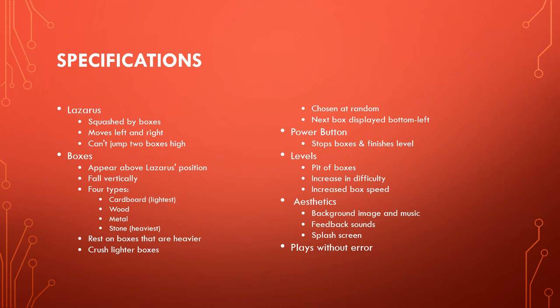From that scenario we can develop the following specifications. The Lazarus object is squashed by boxes, moves left and right, and can drop two boxes high. The box objects appear above Lazarus's position and fall vertically. There are four types: cardboard, wood, metal, and stone — cardboard is the lightest and stone is the heaviest. A box rests on boxes that are heavier than it.